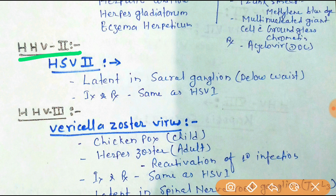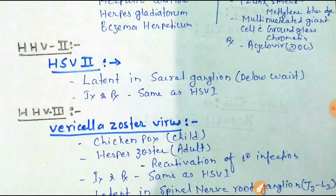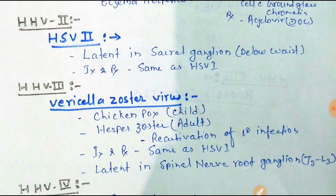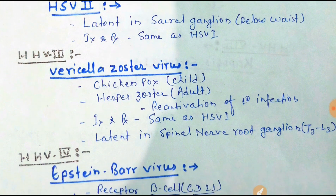Herpes Simplex Virus type 2, also known as Human Herpes Virus 2, is latent in the sacral ganglion — below the waist. Diagnosis and treatment are the same as for HSV-1: investigation by immunofluorescence and Tzanck smear showing multinucleated giant cells with ground glass chromatin, and treatment with acyclovir.